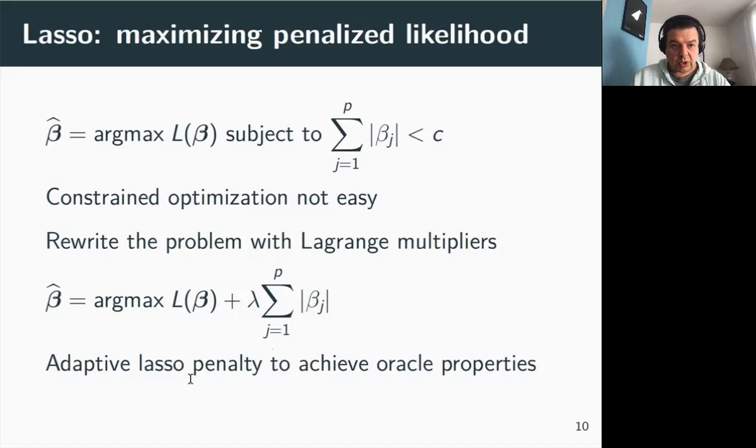In our case, we're going to use an adaptive LASSO penalty to ensure that the most important covariates, that is to say those with coefficient estimates that are further away from zero, will be penalized less. And this construction, the fact that we use an adaptive LASSO penalty, also enables the whole procedure to achieve what we call the oracle properties, which means that asymptotically the correct subset of coefficients and covariates will be chosen and the procedure has an optimal estimation rate.